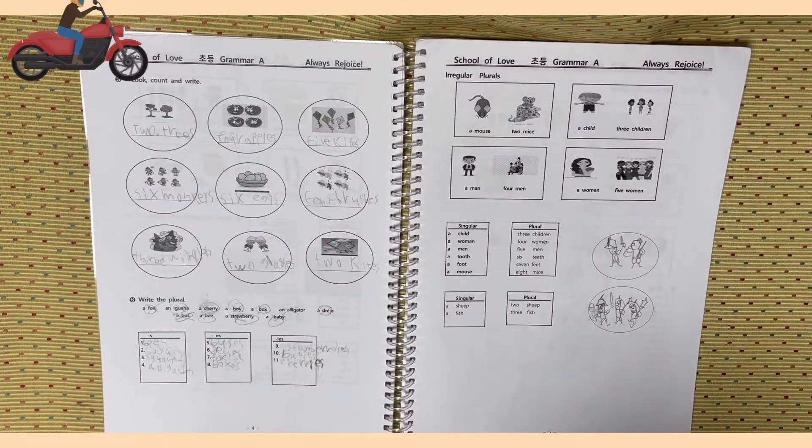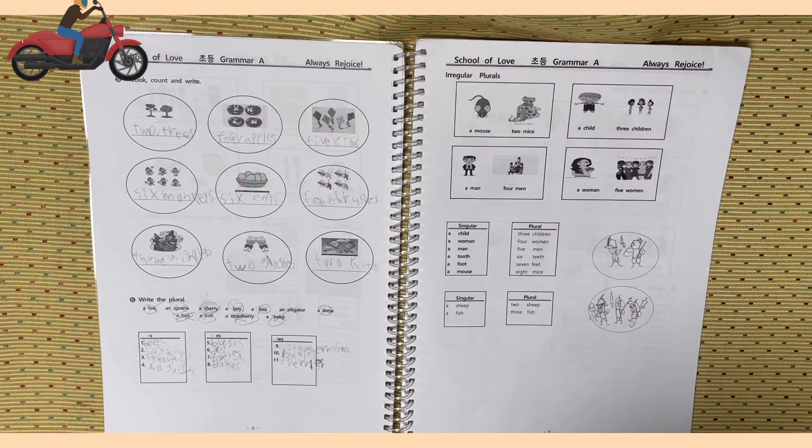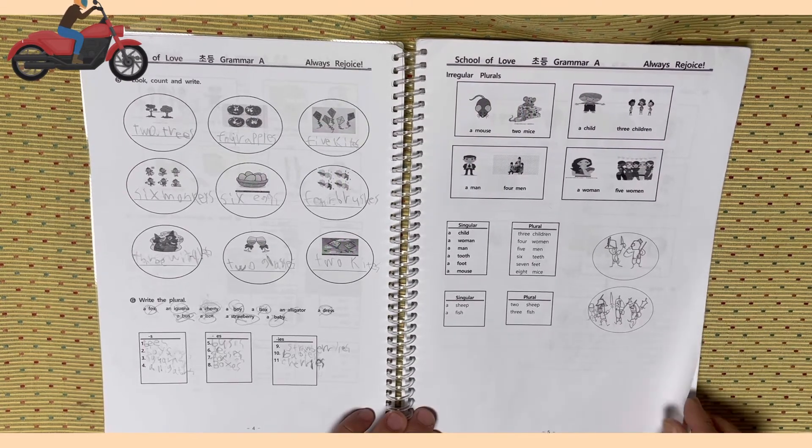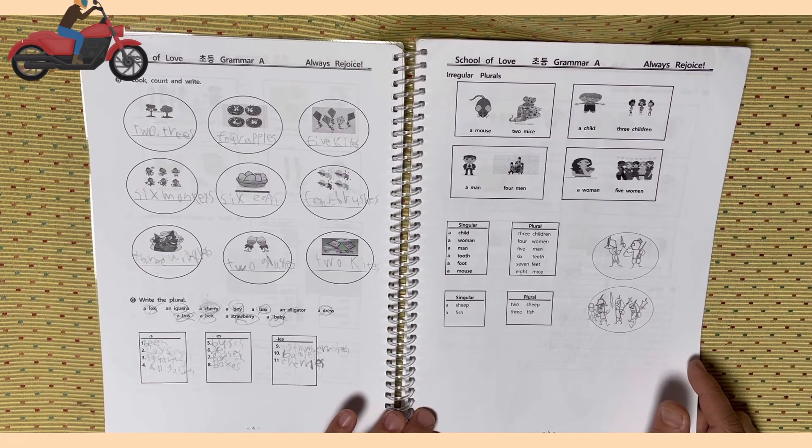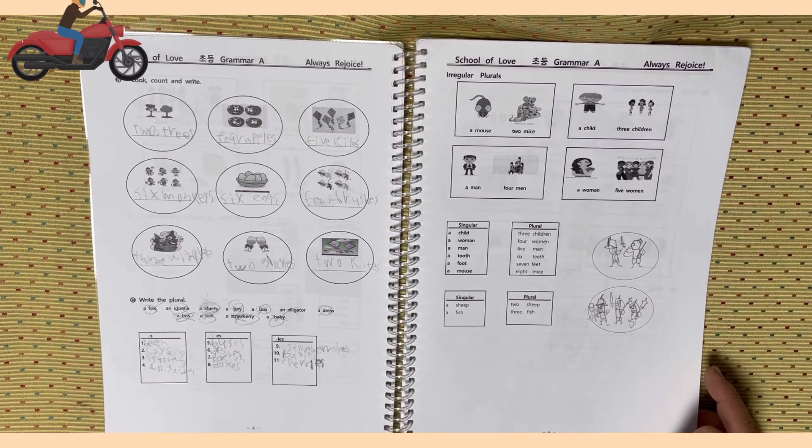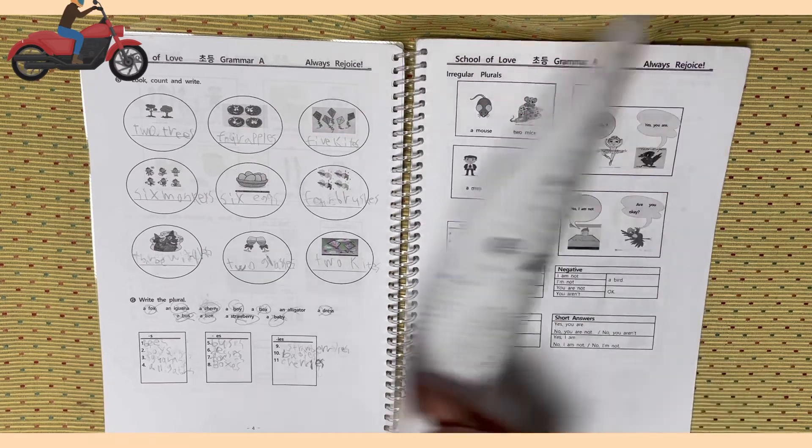A mouse, two mice. A child, three children. A man, four men. A woman, five women. Singular: a child, three children, a woman, four women, a man, five men, a tooth, six teeth, a foot, seven feet, a mouse, eight mice, a sheep, two sheep, a fish, three fish.